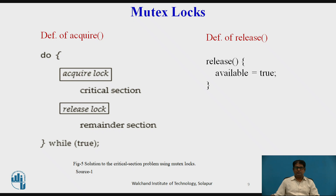The calls to either acquire or release must be performed atomically. Mutex locks are often implemented using hardware mechanisms. The main disadvantage is that they require busy waiting: while a process is in its critical section, any other process that tries to enter must loop continuously in the call to acquire. Such mutex locks are also called spin locks because the process spins while waiting for the lock to become available. When locks are expected to be held for a short time, spin locks are useful and are often employed on multiprocessor systems where one thread can spin on one processor while another thread performs its critical section on another processor.